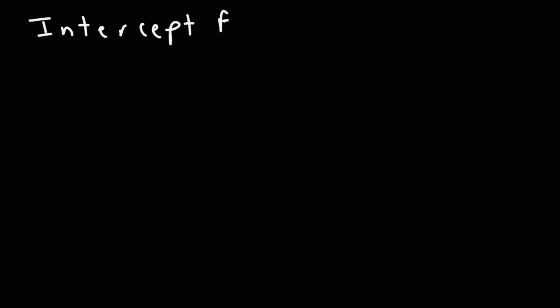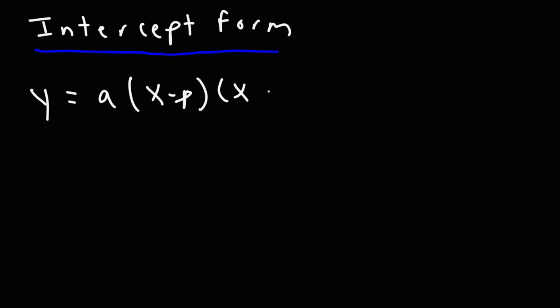The last form is not very common, but it's called the intercept form of a quadratic equation — there's a good chance you may not use this in class. The intercept form is y = a(x − p)(x − q). This is basically the factored form of a quadratic equation, and it's easy to see what the x-intercepts are.